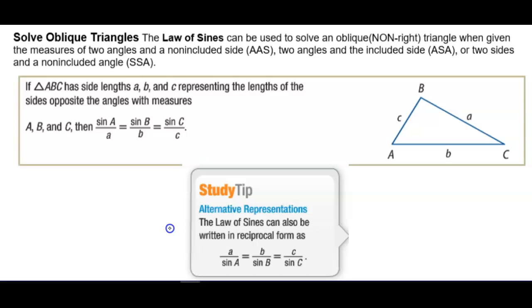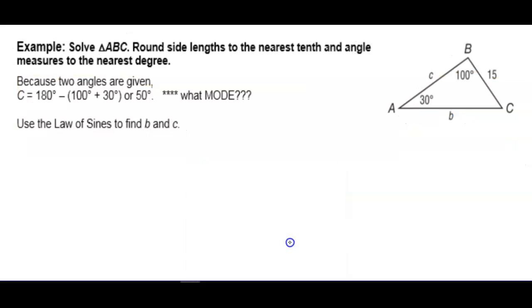Anytime you have a triangle ABC, the lowercase letters are the sides, and the capital letters are the angles. Angle B is across from side B, angle A is across from side A, and so on. And you can set up Law of Sines. You don't need all three, you need any two.